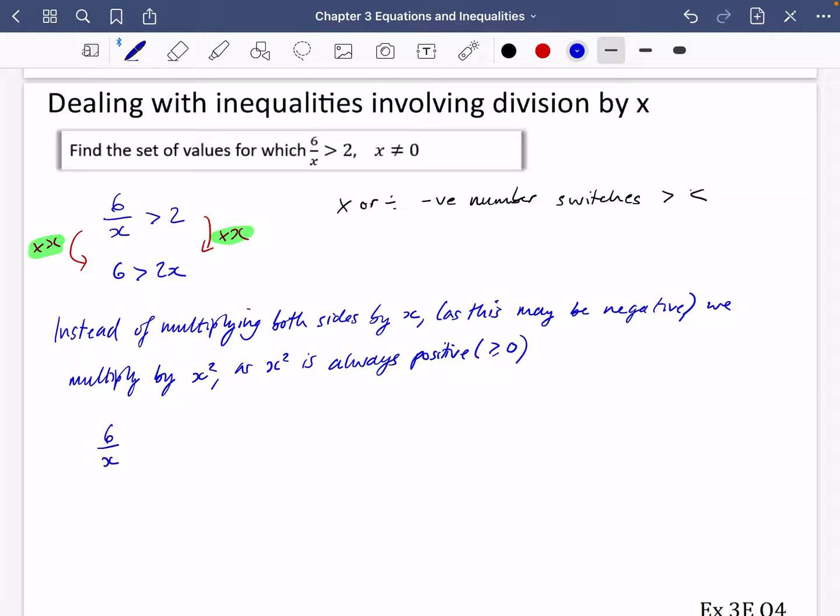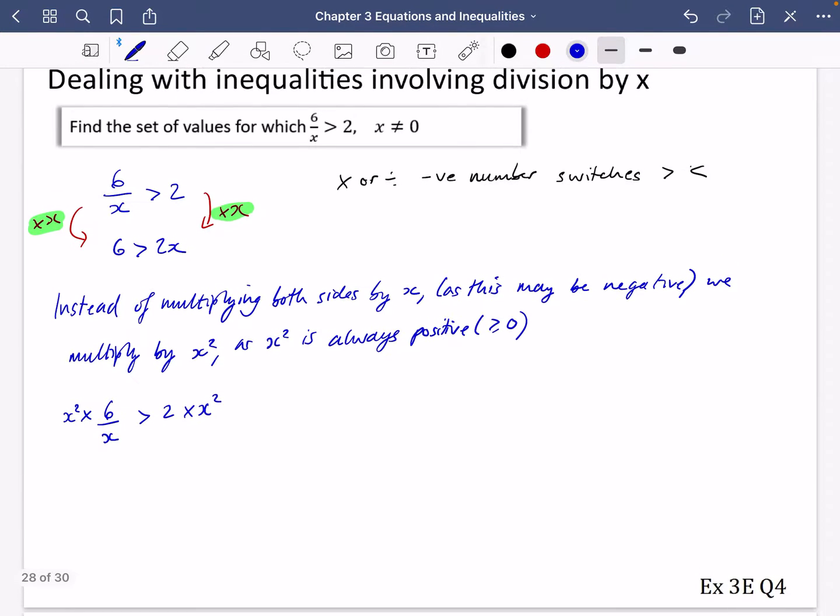So I have 6 over x is greater than 2. Now I'm going to multiply this side by x squared, and I'm going to multiply this side by x squared. That's definitely not going to do anything illegal. Now this side, I have 6x squared divided by x, that's just going to be 6x. And this side is 2x squared.